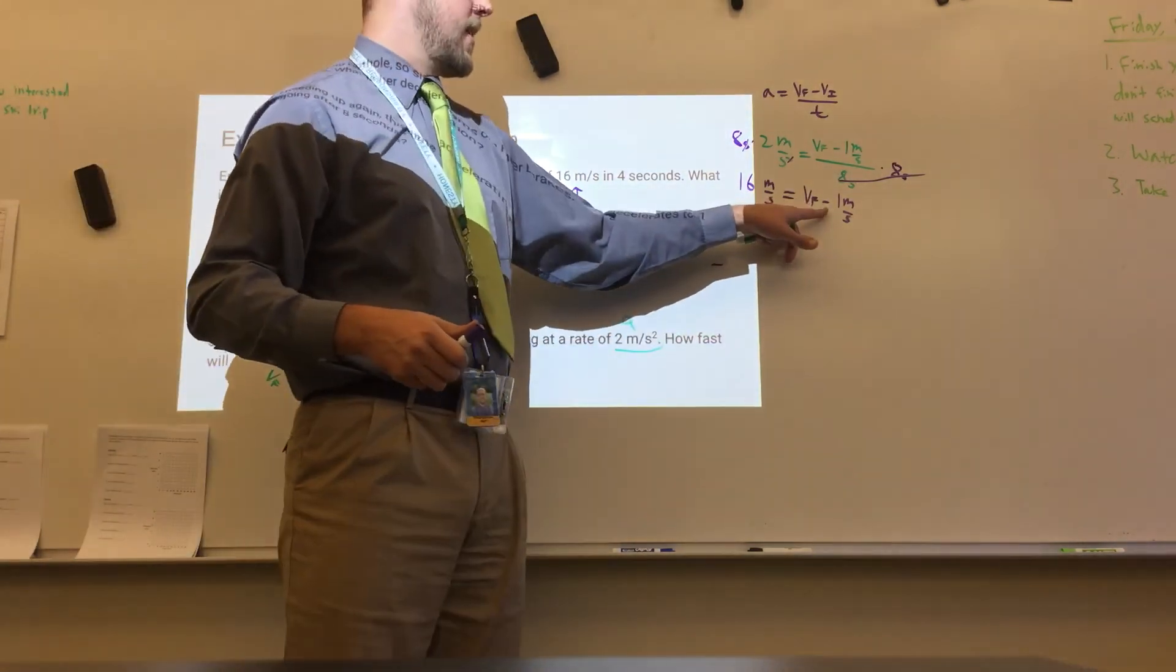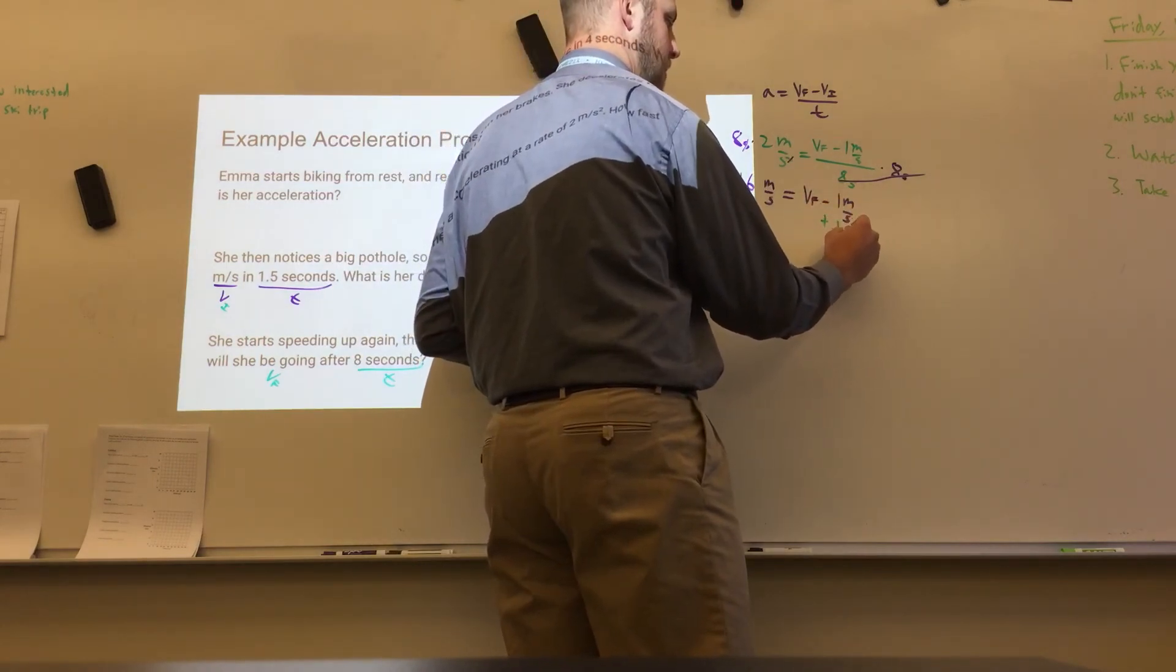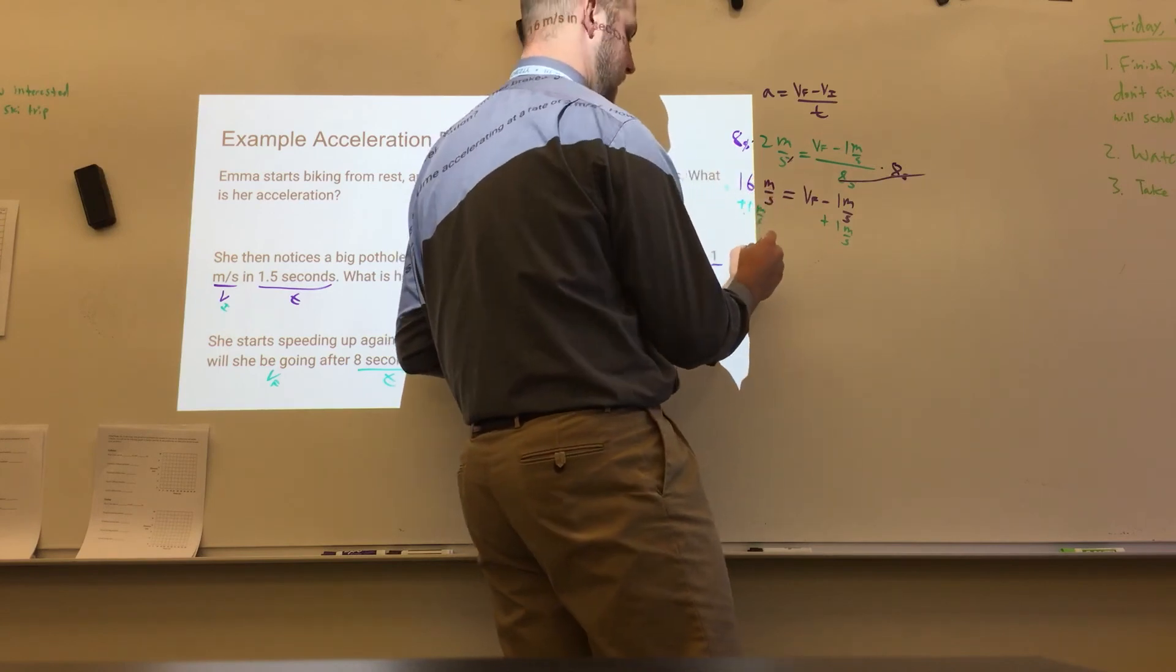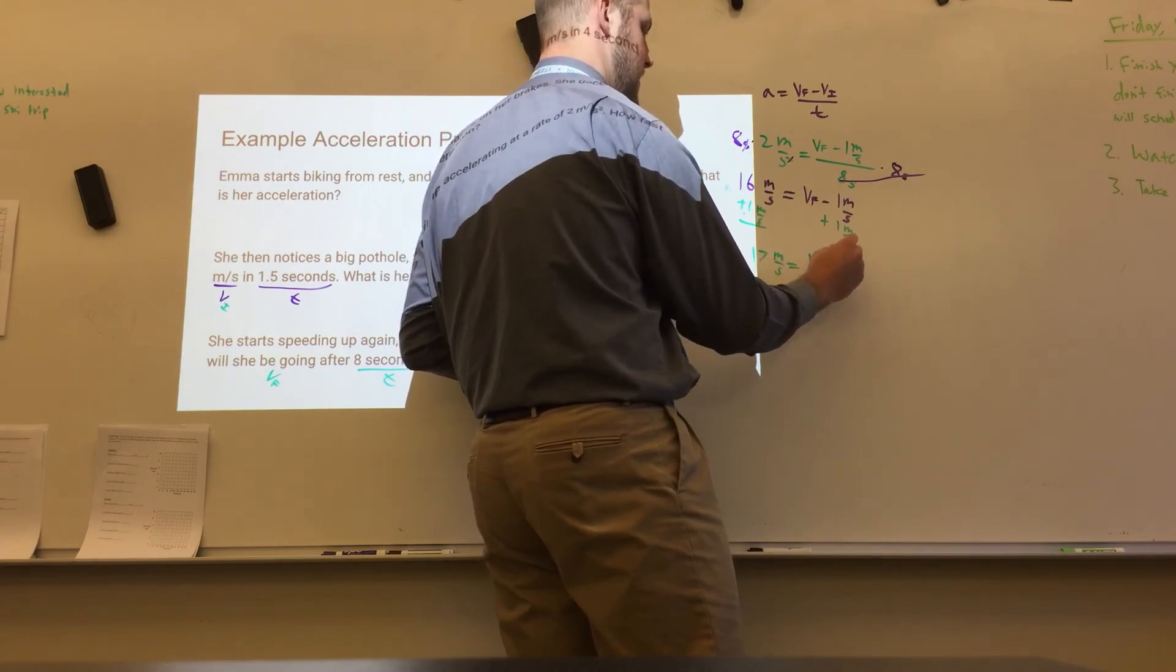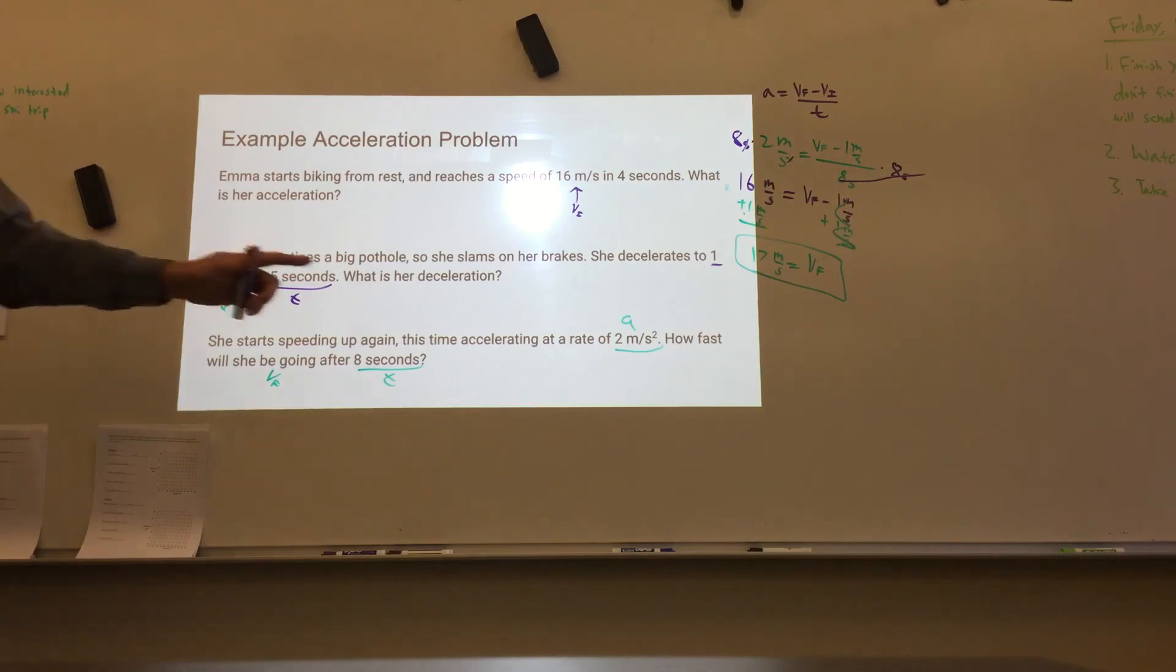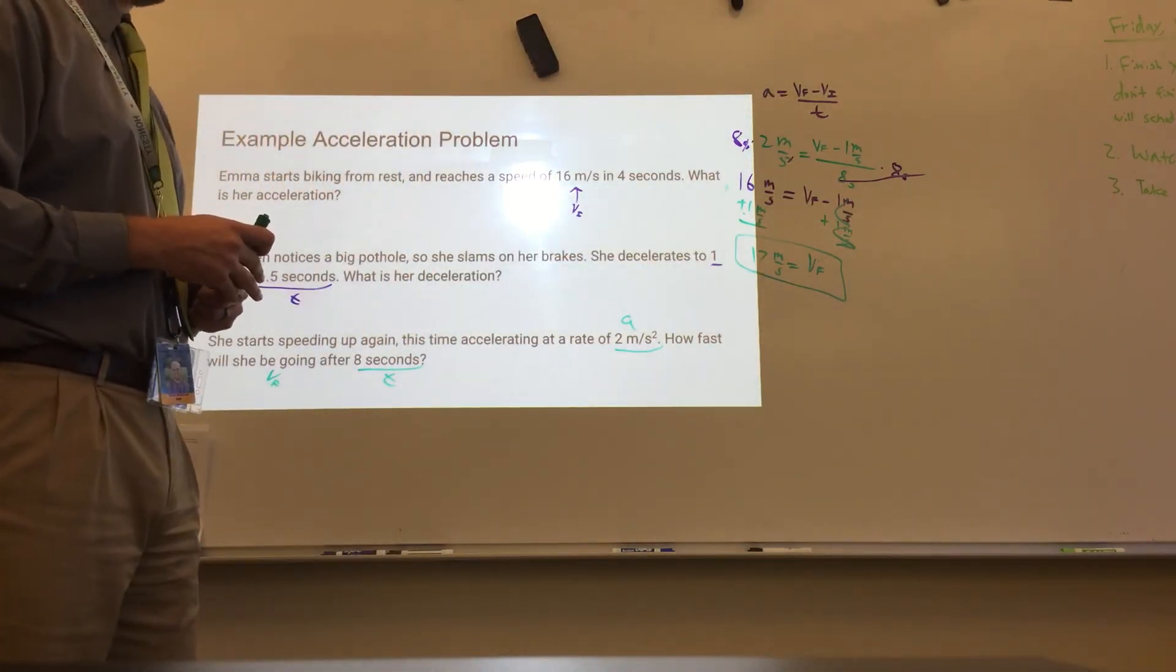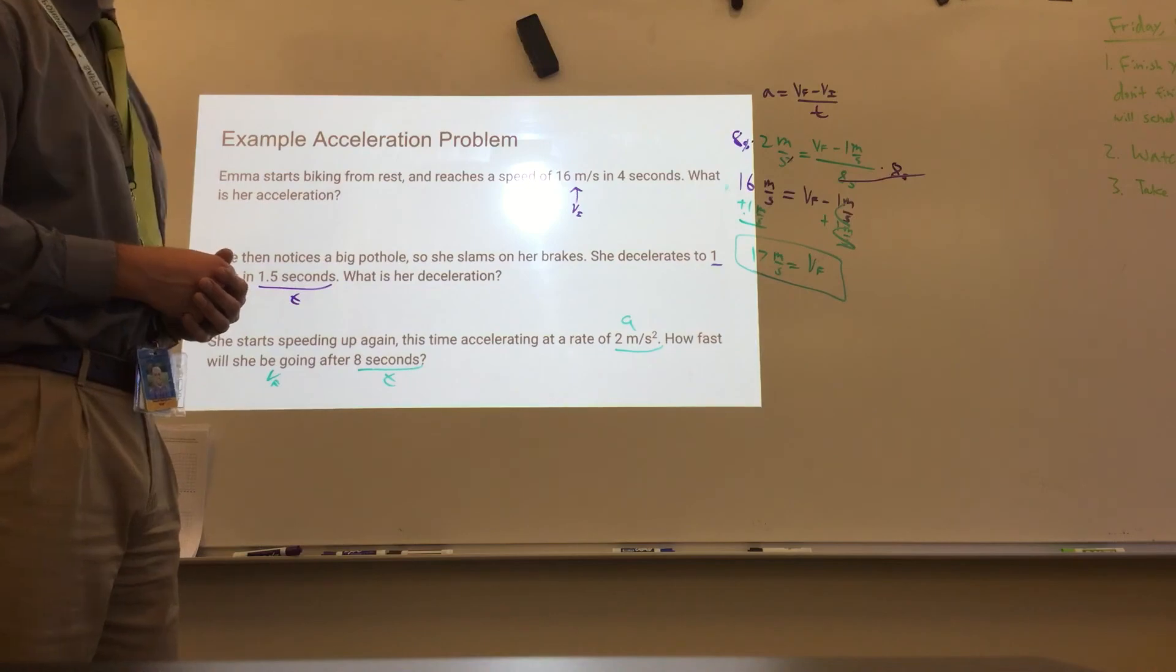Now, order of operations says we can get rid of this. So I will add 1 meter per second. I will add 1 meter per second. So that gives me a total of 17 meters per second is equal to velocity final, because that cancels out over here. So if Emma accelerated at a rate of 2 meters per second squared for 8 seconds, starting at 1 meter per second, she would be traveling 17 meters per second at the end there. So these are a few different styles of how you solve different kinds of acceleration problems. I'm hoping that helps you with those types of problems.